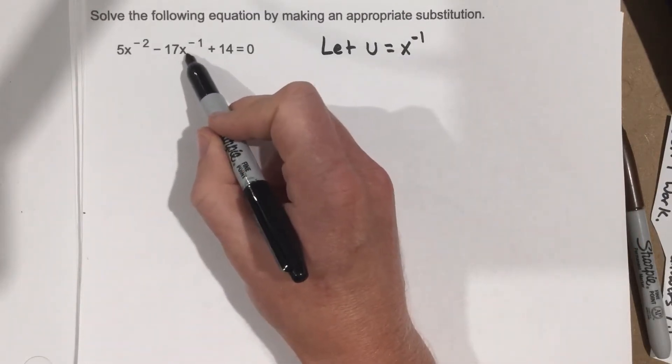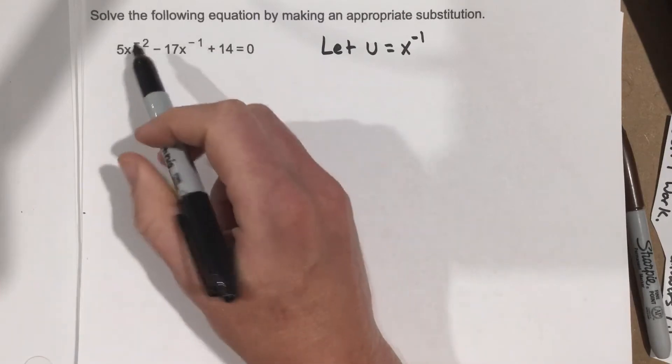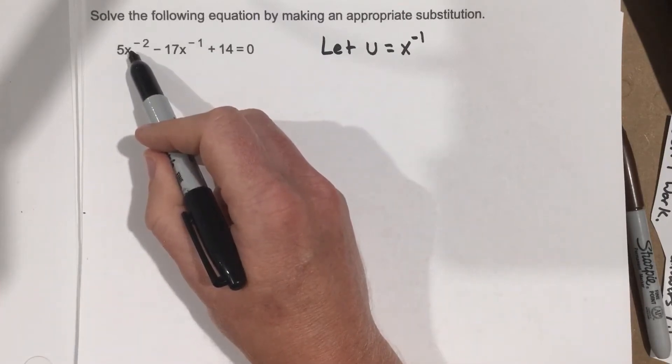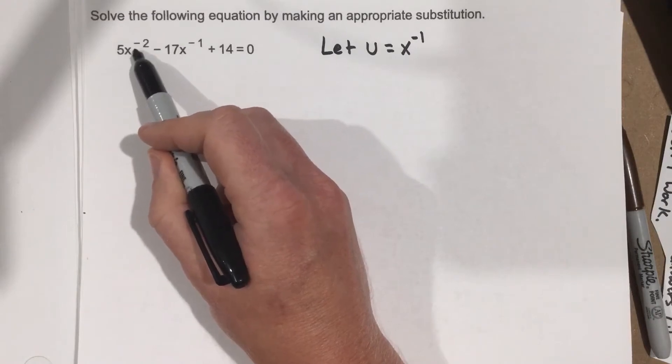well, that means this is going to change to u. And because this is x to the negative 1 times x to the negative 1, which is x to the negative 2, this is going to end up being u squared.